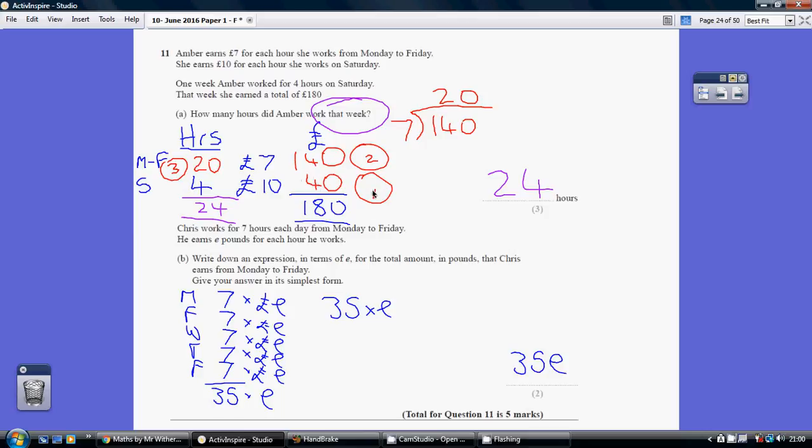Now given I got a total of £180 and I got £40 on a Saturday, I must have got the rest, so the remaining £140 by working in the week. £180 take away £40 is £140. So how many hours must I have worked in the week to get £140? Given I get £7 an hour, £140 divided by 7 gives me 20 hours I must have worked in the week.